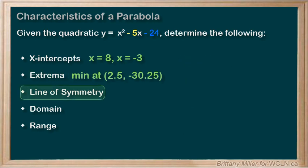The line of symmetry always occurs at the x value of the vertex, and we just found out that this is x equals 5 over 2, or x equals 2.5.